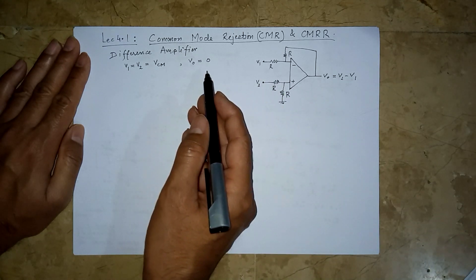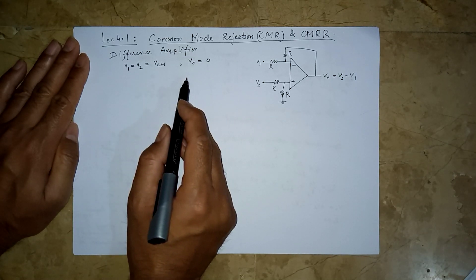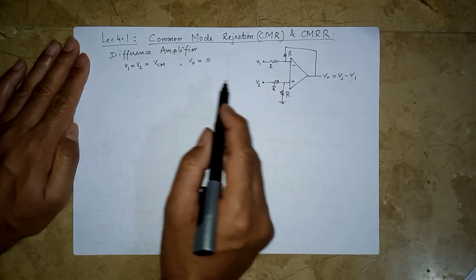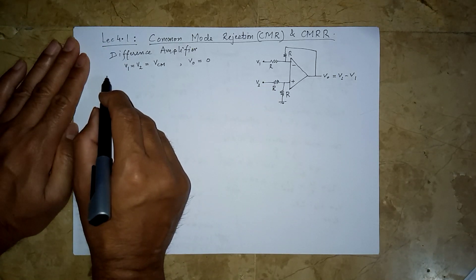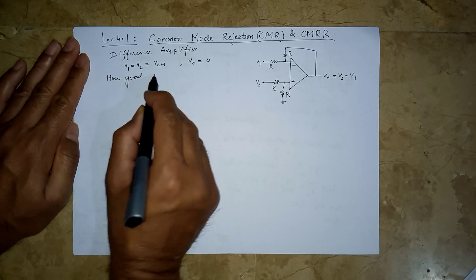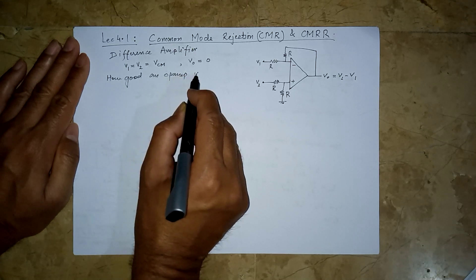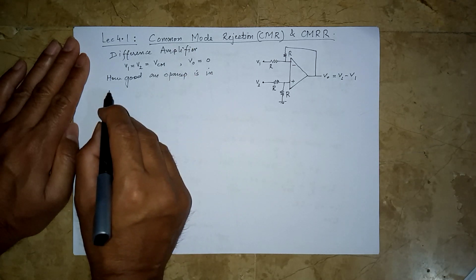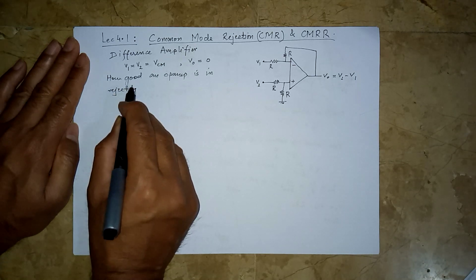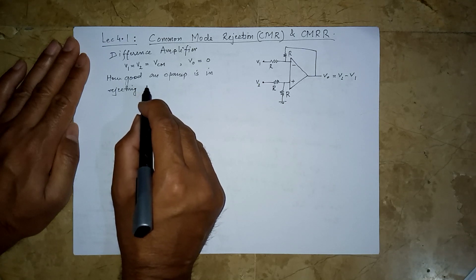In practice, in reality, Vo may not be exactly zero — there would be some small output. So how good an op-amp is at rejecting, or in other words not amplifying, a common mode input signal is what we need to measure.